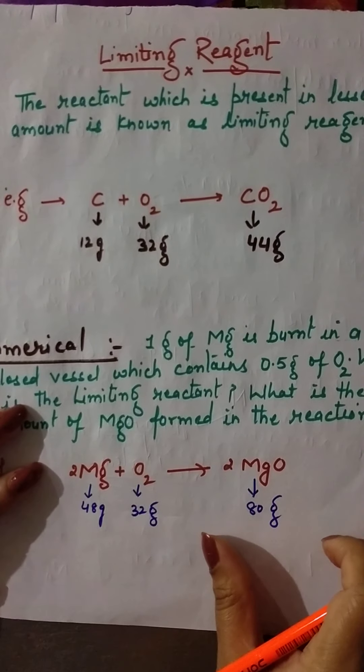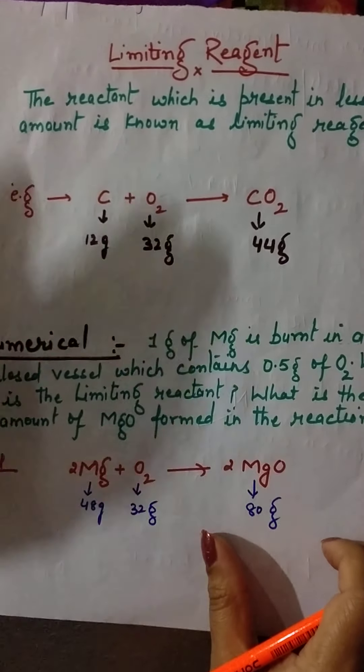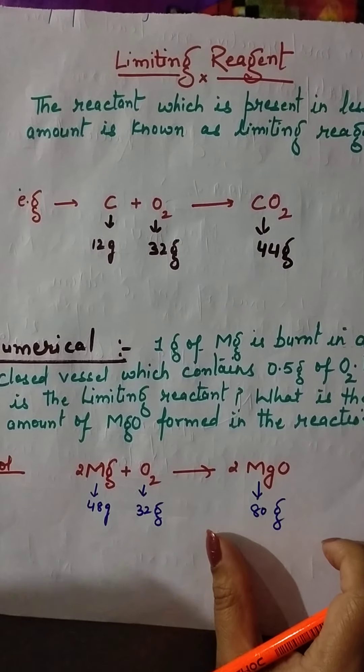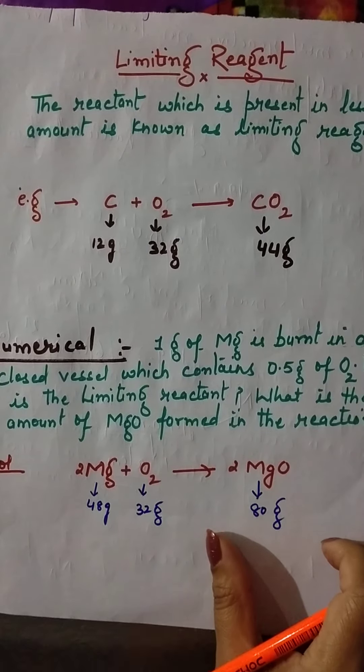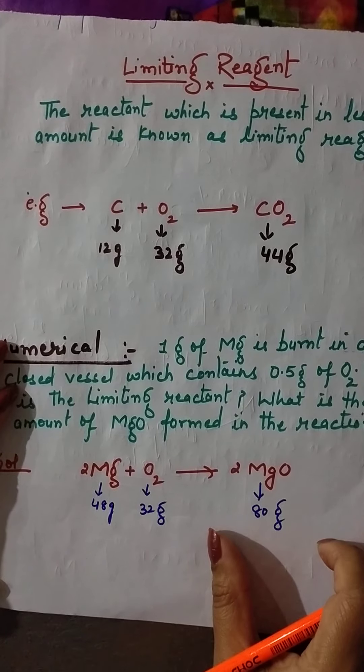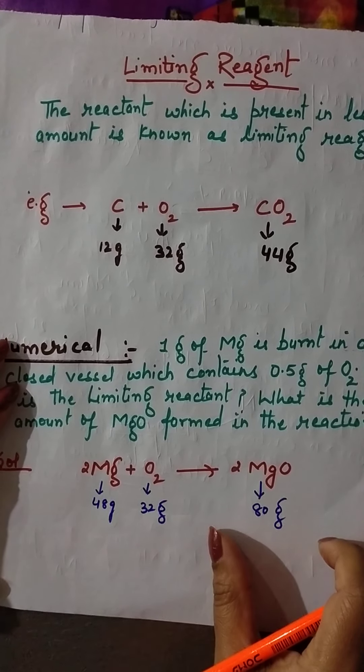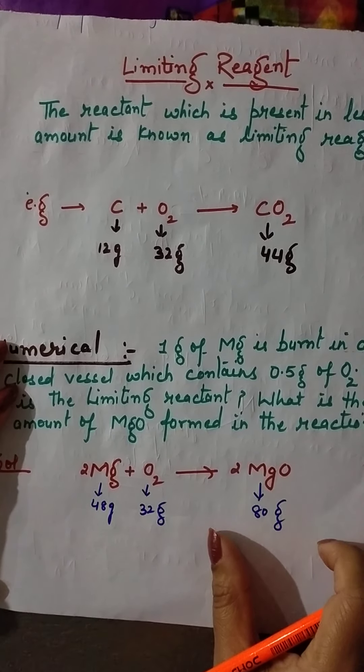Good morning class. Today's topic is limiting reagents. Let's discuss what limiting reagents are. Suppose we are burning wood in open atmosphere. As we know, if we have to burn anything, we need oxygen. When we burn wood, which contains carbon, in the presence of oxygen, the reaction can be written as carbon plus oxygen giving CO2.